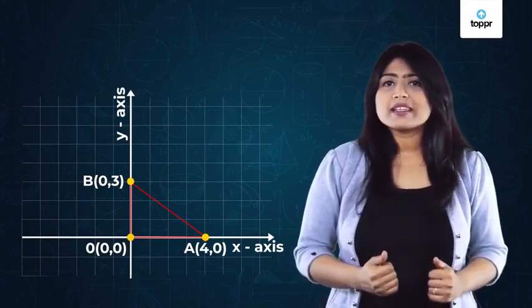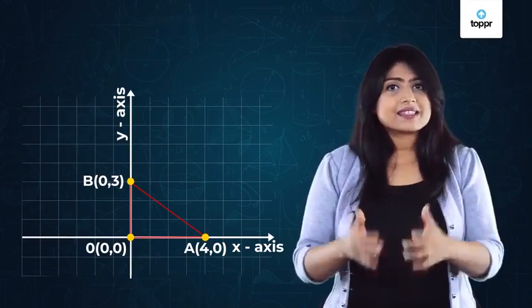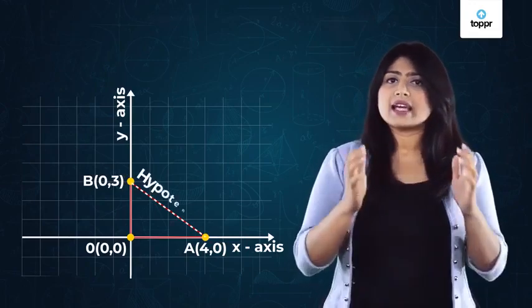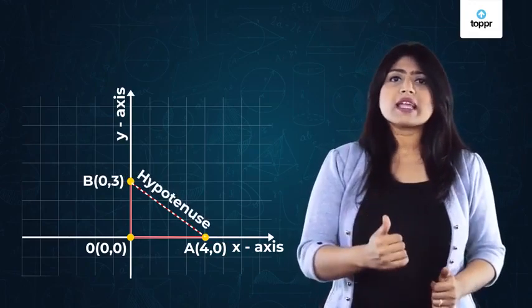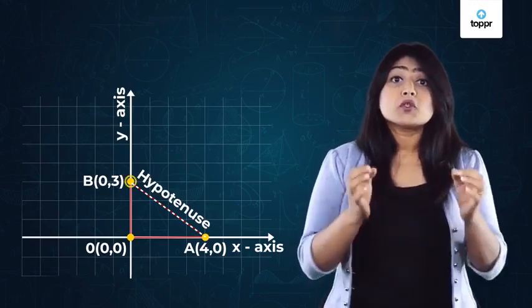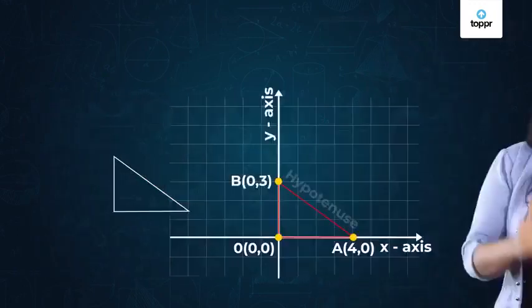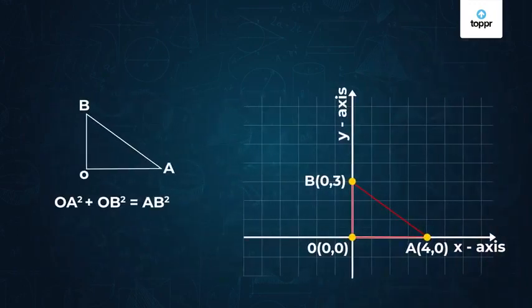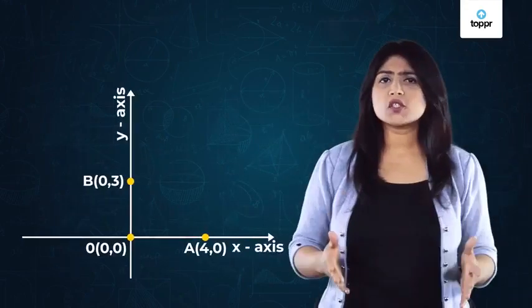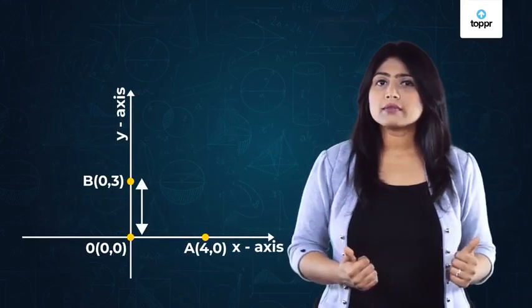The legs of the right triangle are on the x axis and y axis and the hypotenuse of the triangle is the distance between the two points. Using the Pythagoras theorem, we can find the length of the hypotenuse which is the distance between the two points. Do we know the lengths of OA and OB?